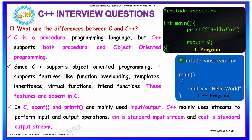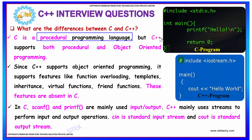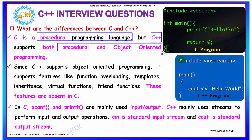What are the differences between C and C++? C is a procedural programming language, whereas C++ is both procedural and object-oriented programming language — that is, it supports both.